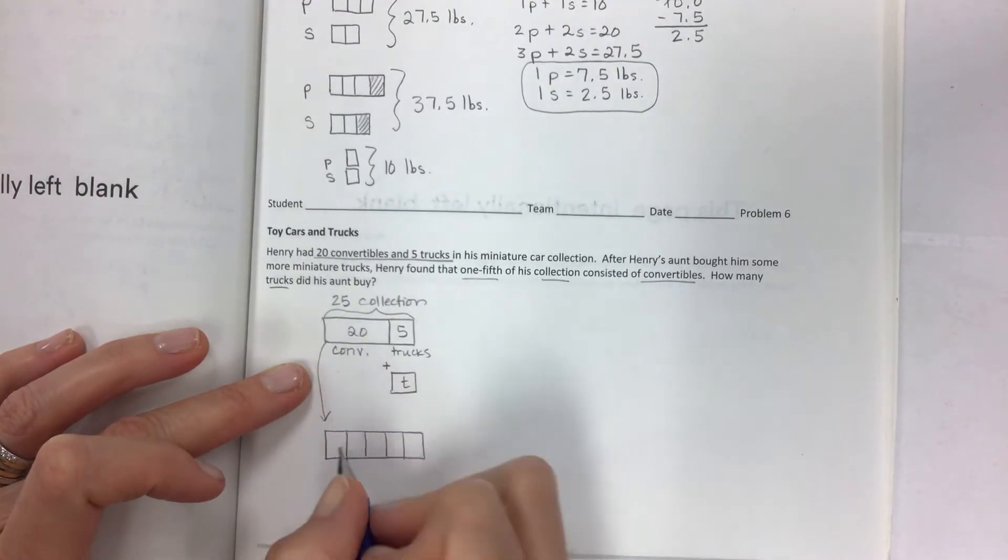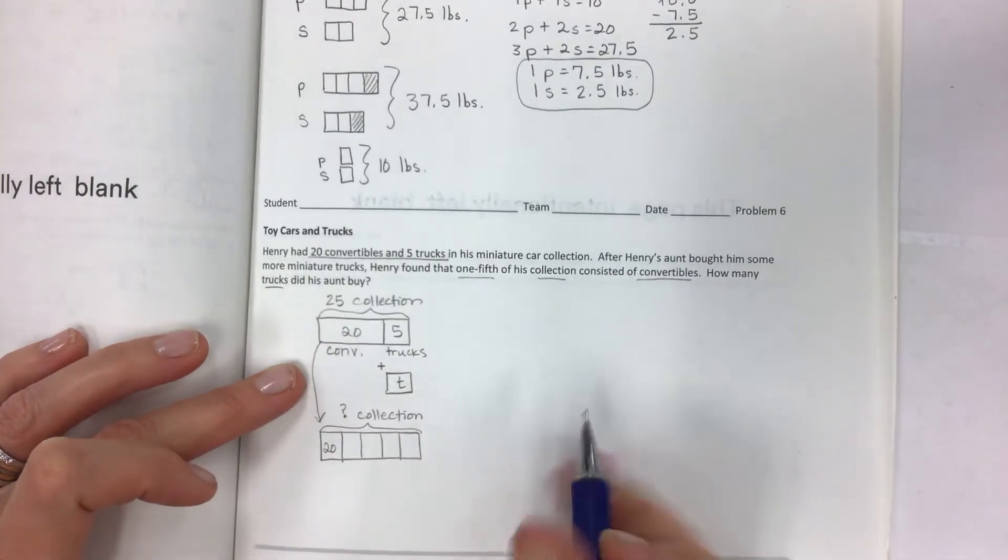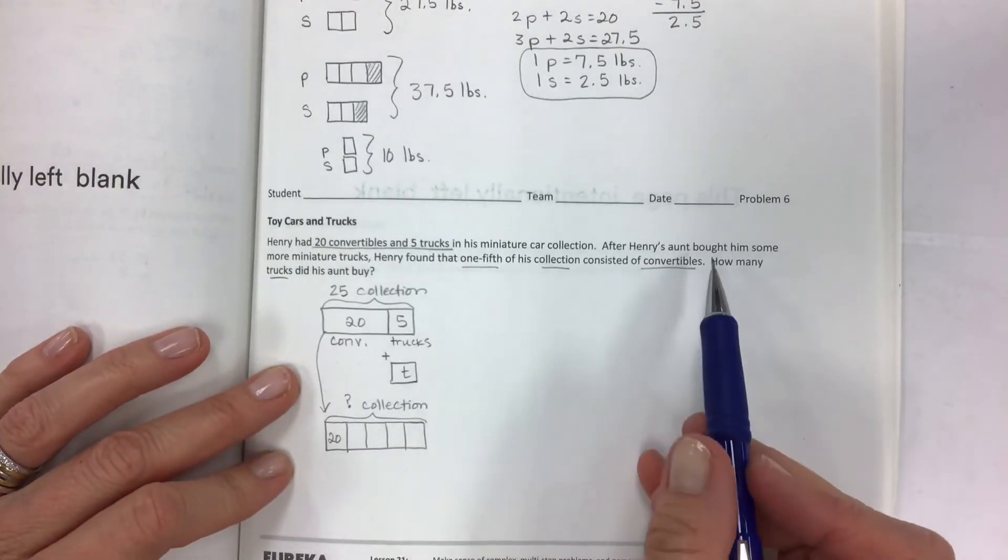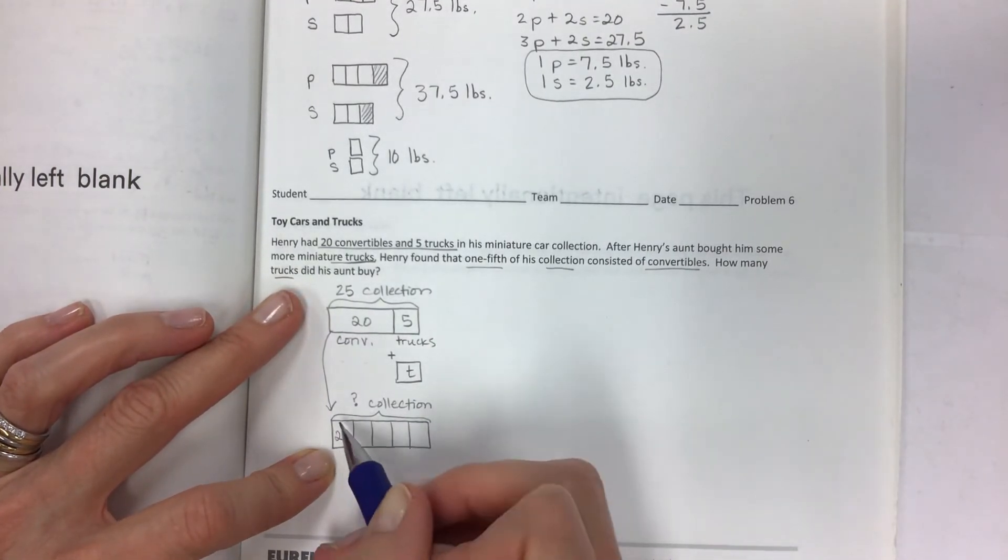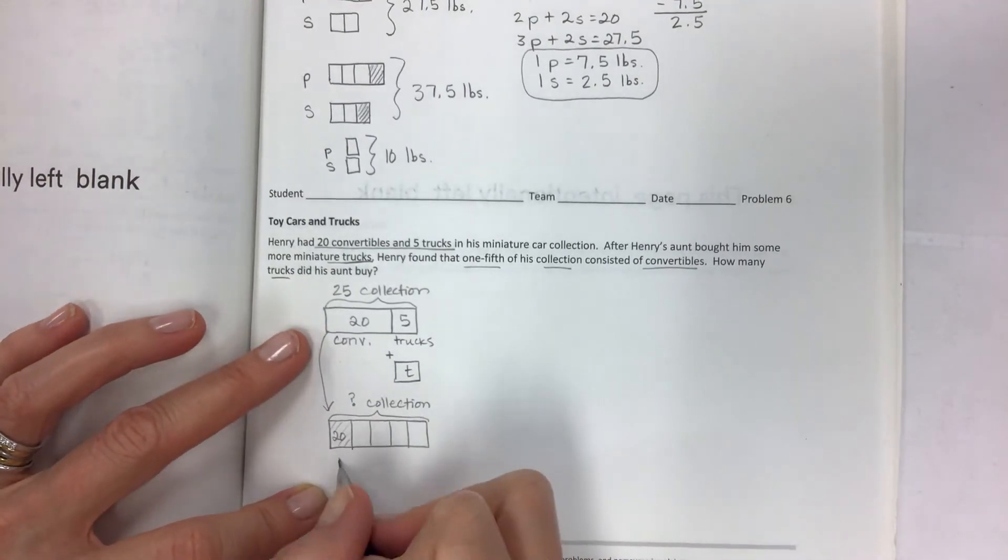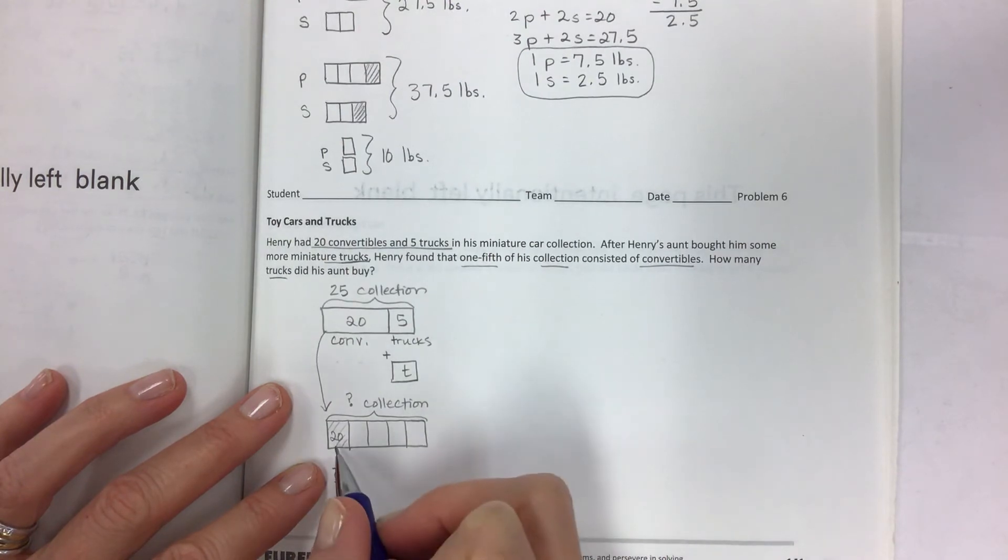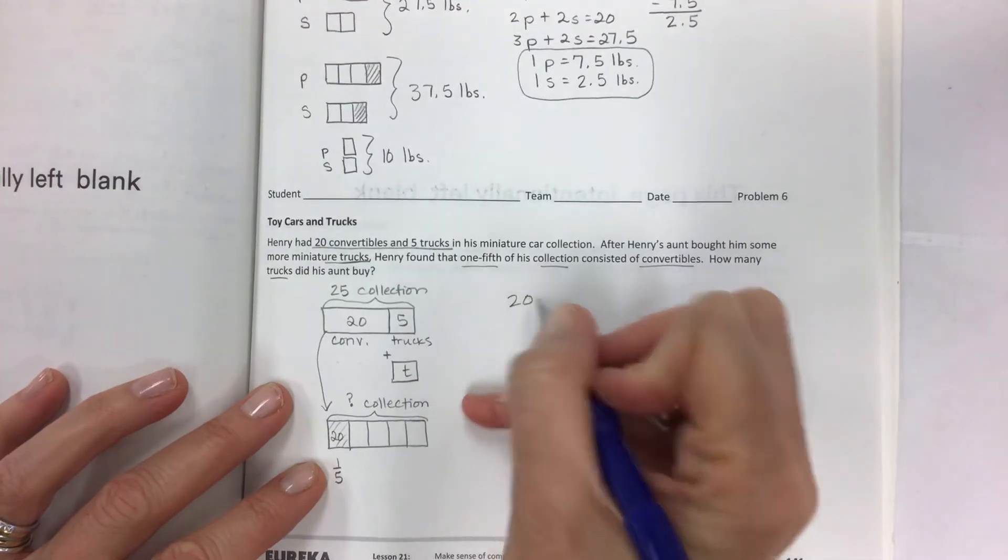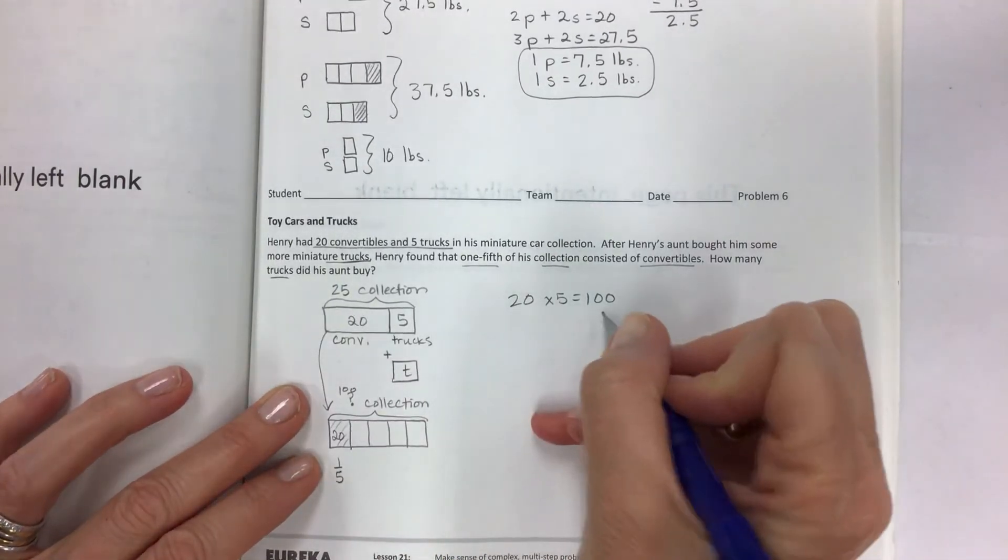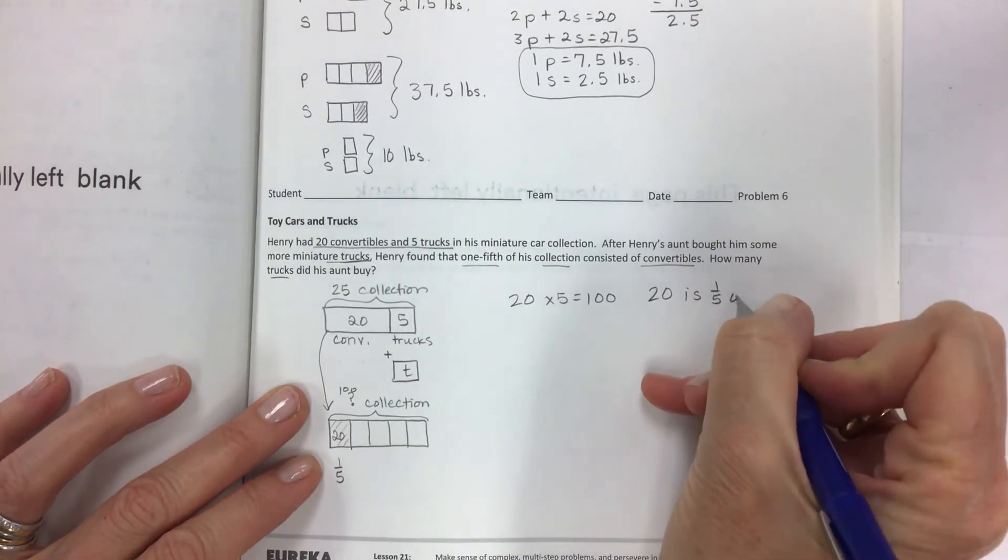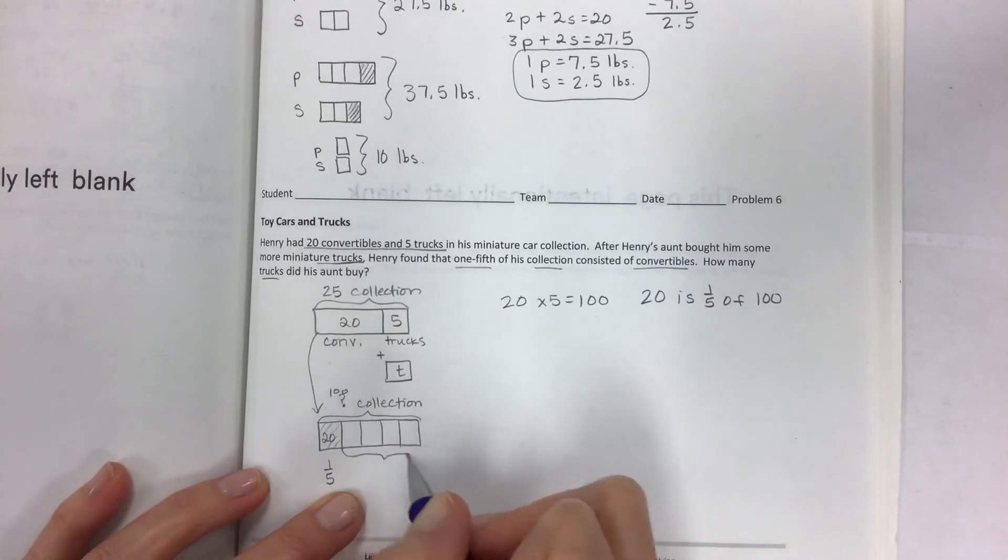Let's do one-fifth. So one-fifth of the collection. Because she only bought trucks, that's why you know that the 20 is going to be this piece here. We're not changing those convertibles, but this is one-fifth of the collection now. If this is one-fifth of the collection, then what is the collection? Well, 20 times 5, so 20 times 5 equals 100. So the collection would have 100 cars in it. You can look at it as 20 is one-fifth of 100.